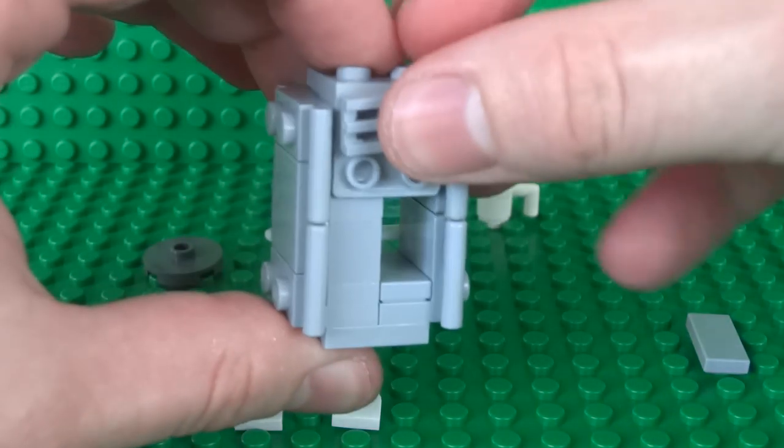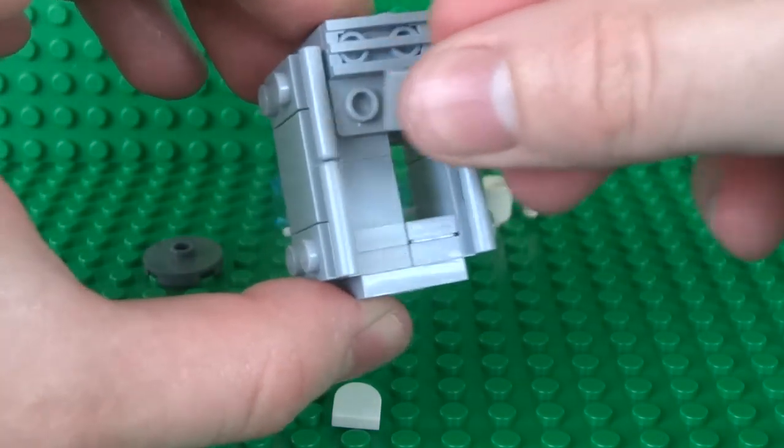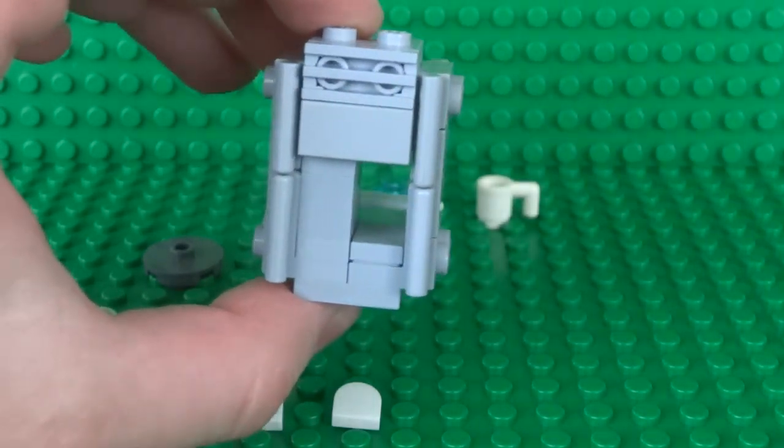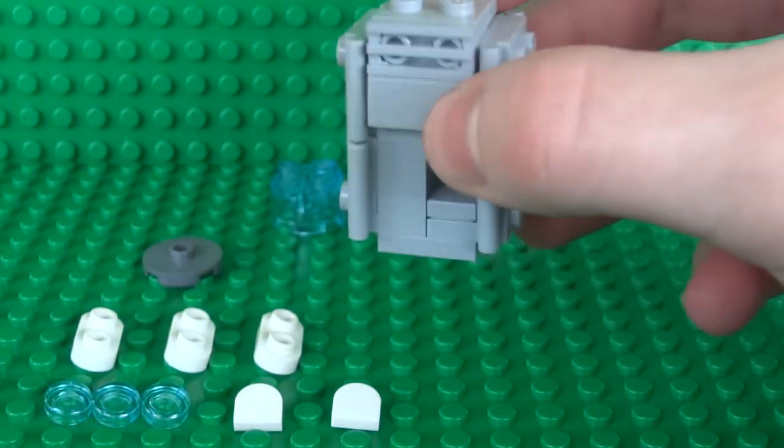Then attach a 1x2 grill over on the top of that and a 1x2 tile just underneath that just for some decoration.